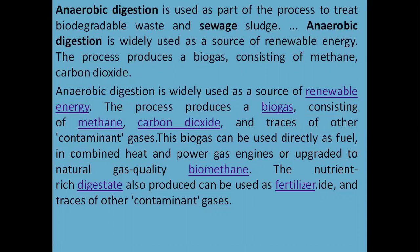Anaerobic process: anaerobic digestion treats biodegradable waste and sewage sludge. It is widely used as a source of renewable energy. The process produces a biogas consisting of methane (CH4), carbon dioxide (CO2), and traces of other contaminated gases. The biogas can be used directly as fuel in combined heat and power gas engines or upgraded to natural quality biomethane. The nutrient-rich digestate produced can also be used as fertilizer.